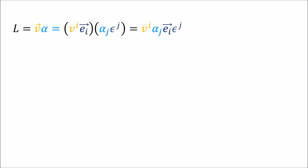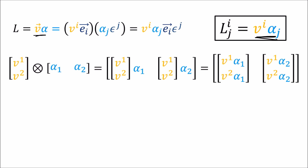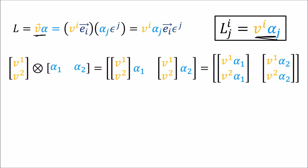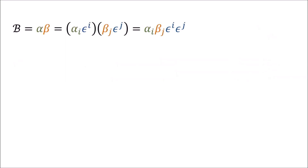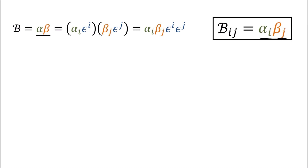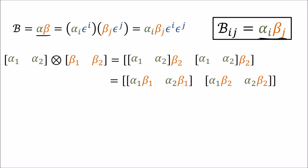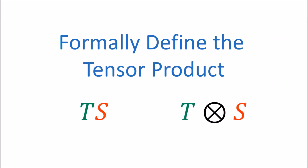In previous videos I've shown how combining a vector and a covector together using the tensor product can give us a linear map. The coefficients of this linear map are really just the entries of an array given by the Kronecker product of the column vector representing the vector and the row vector representing the covector. We also showed that combining two covectors using the tensor product gives us a bilinear form whose coefficients are given by the Kronecker product of the two row vectors associated with those covectors.